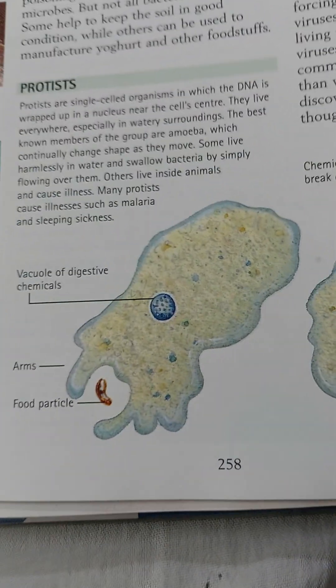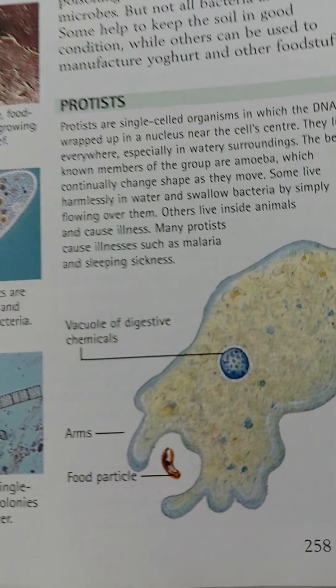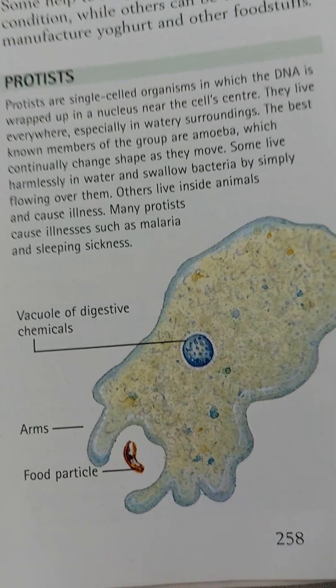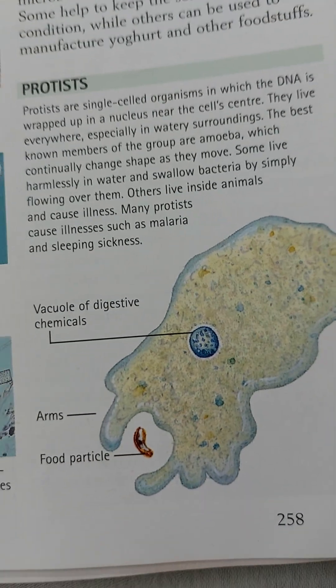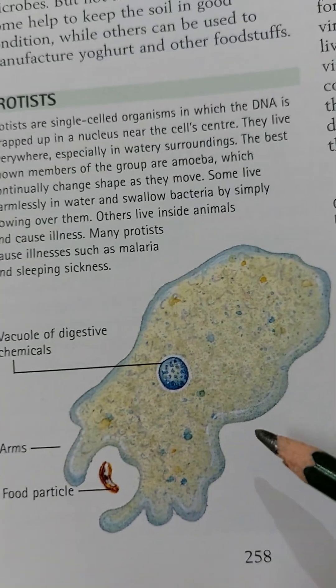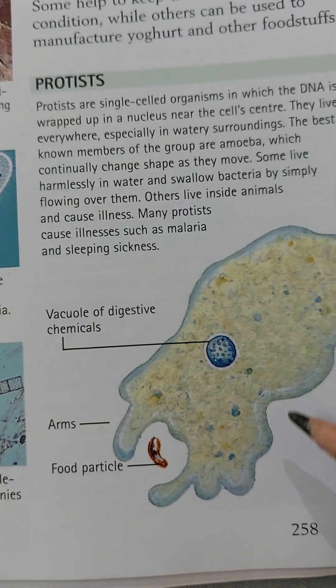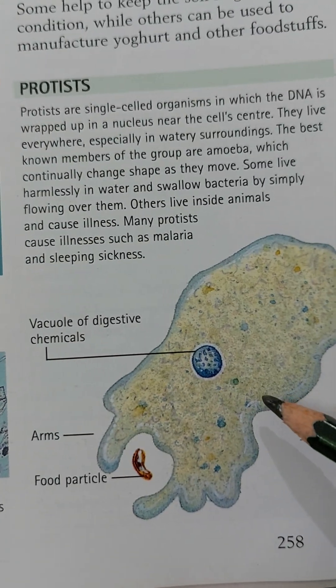For example, this is an amoeba. Amoeba is a unicellular organism and it is water-based, living in a water-based environment.